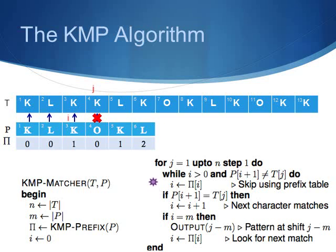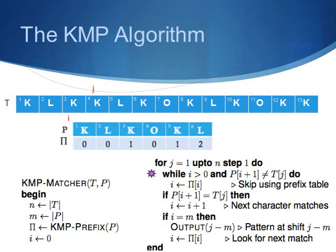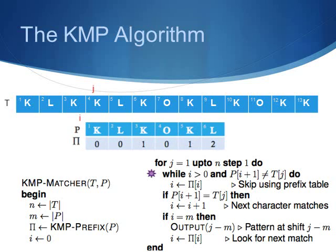As we have a mismatch and as i is greater than 0, our while condition is satisfied so we set i as pi[i] which is 1 in our case. However, you might notice that our while condition would be satisfied if we have another mismatch which we do, so we set i as pi[i] which is 0 in our case. However, we are not yet done with this iteration of the for loop because we need to check whether our if condition is satisfied. As we have a match it is and we increment i by 1.